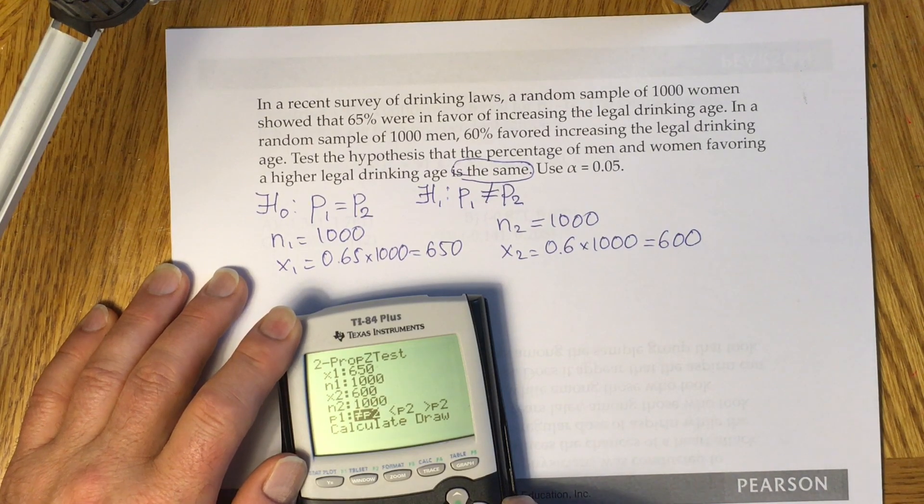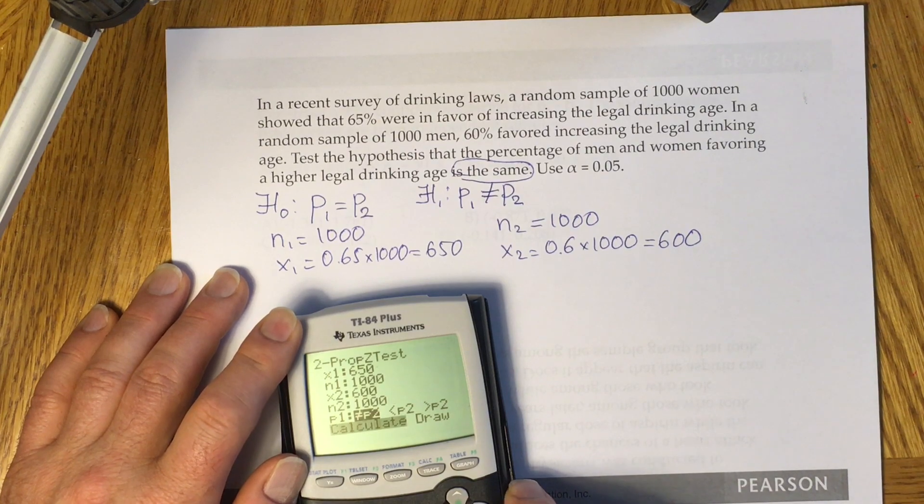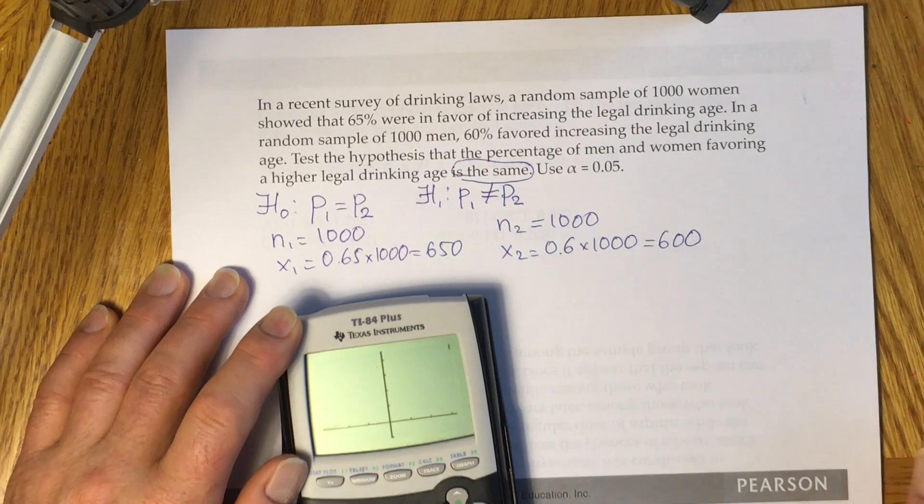Then you will have to highlight the not equal sign. It's already highlighted in my case. I don't have to do anything. Then you have to go to draw and click enter.